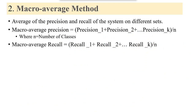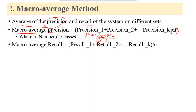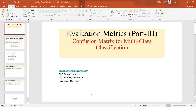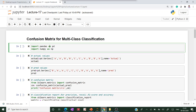Macro average is the simple average of precision and recall across all classes. Macro average precision = (Precision_A + Precision_B + Precision_C) / N, where N is the number of classes (3). Similarly, macro recall = (Recall_A + Recall_B + Recall_C) / N.